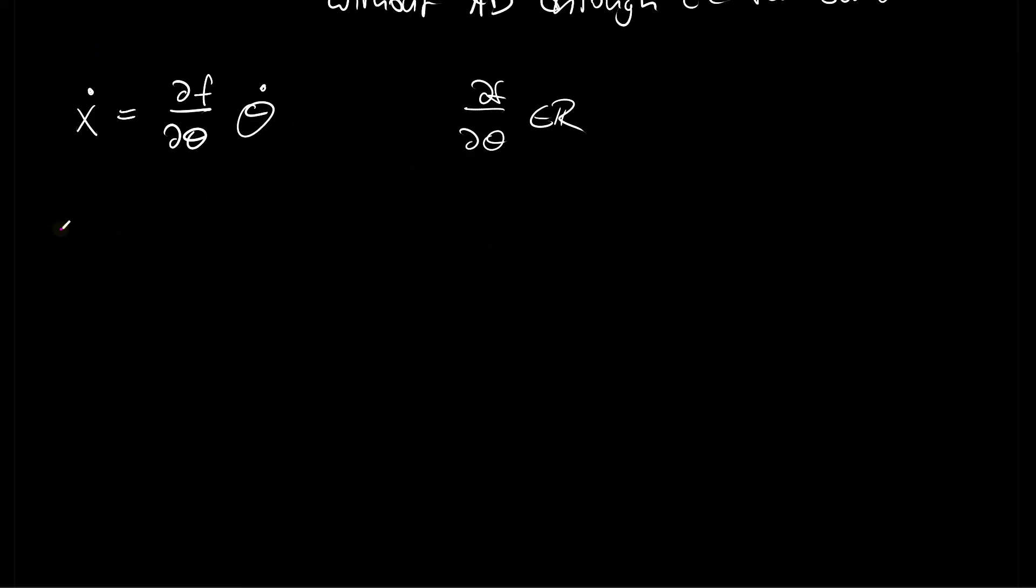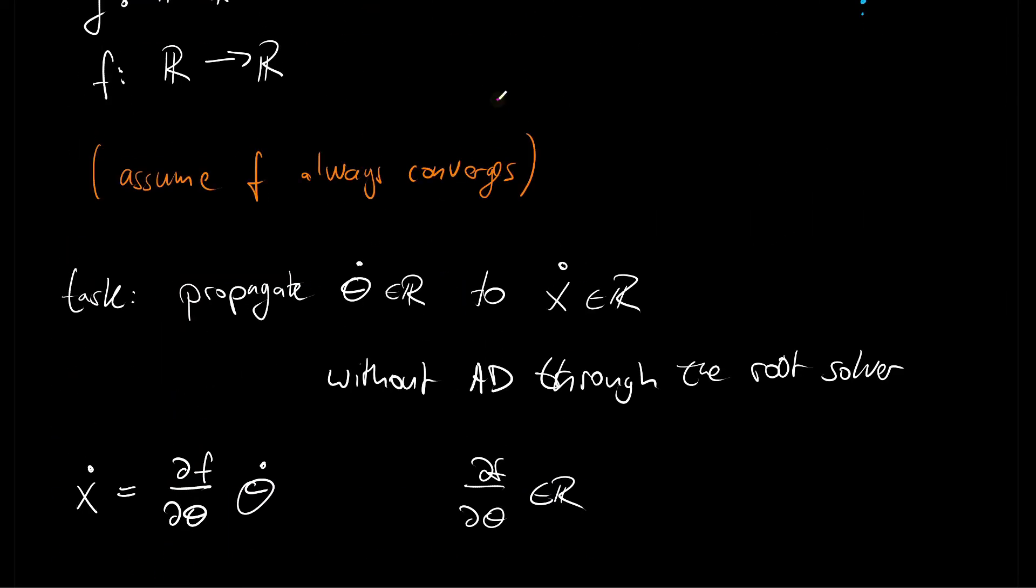So let us take the total derivative of the optimality condition. And this optimality condition, that was the g function. So we will take dg by d theta. And then let's take a look at g.